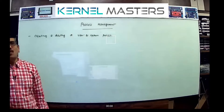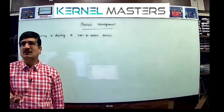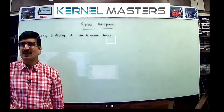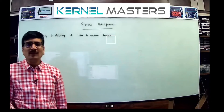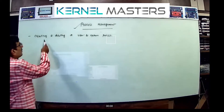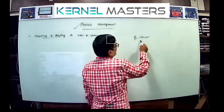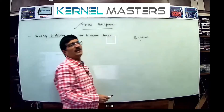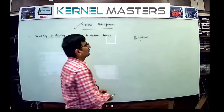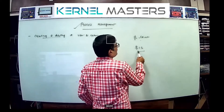For example, when you log in and run the ls command, a new process is created, and after some time the process terminates. Similarly, the bc command creates a new process, and opening the Firefox browser creates a new process. So process creation and termination — in the command line we can execute a process, and after some time it automatically terminates depending on program behavior.